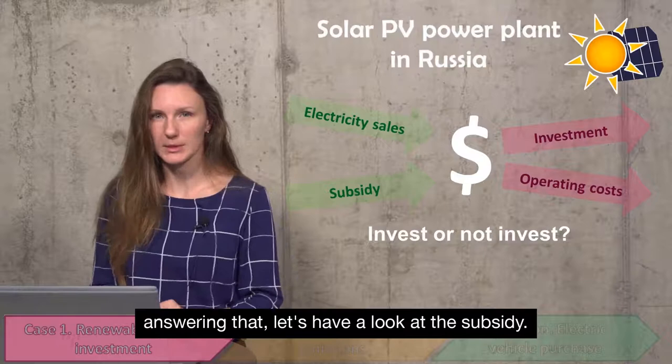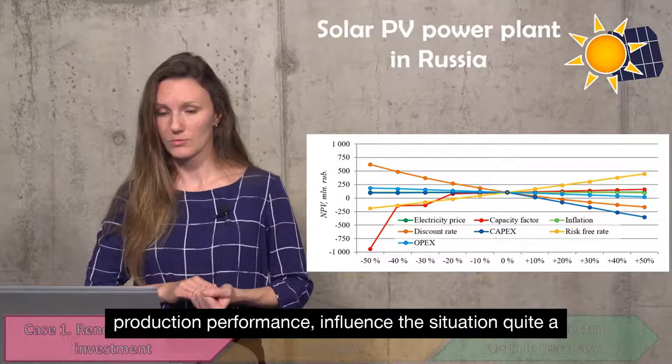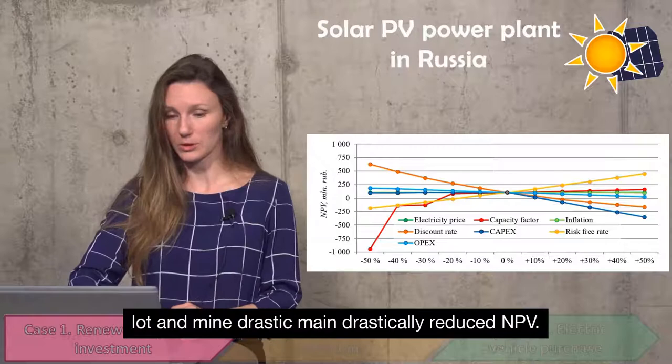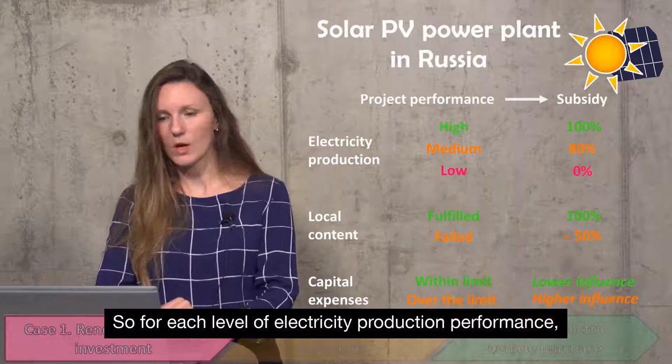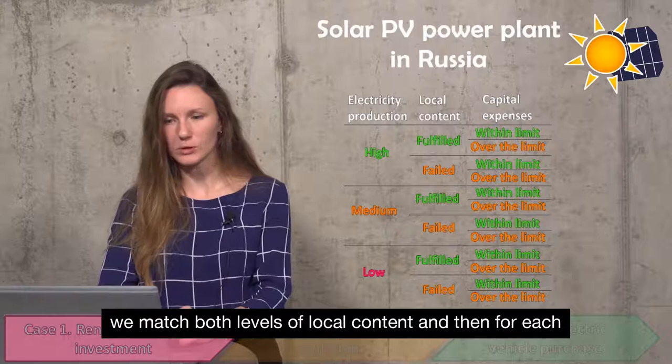Before answering that, let's have a look at the subsidy. We can see that the capacity factor — which is electricity production performance — influences the situation quite a lot and might drastically reduce the net present value. The model runs the calculation many times in order to get the probability distribution, and here is the resulting probability distribution.